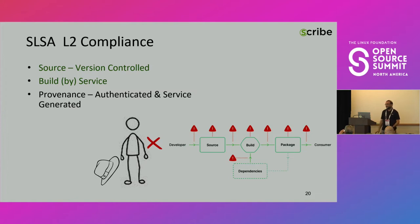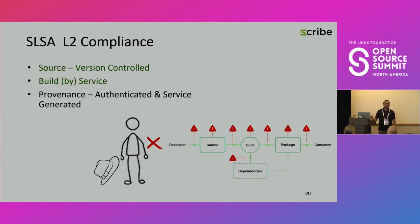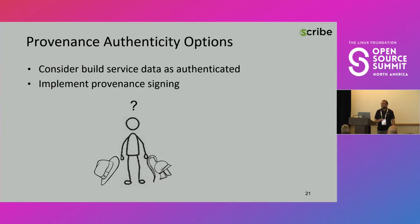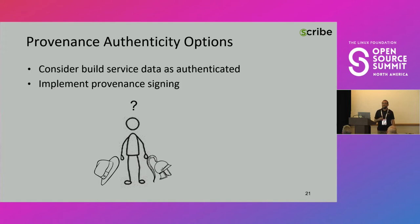So the source version control — again, once we're talking about modern projects, sources are version controlled; not much to do. Also, modern projects would be built by a service. So we're left with a provenance that should be authenticated and service generated. The natural answer of the security expert to 'what is authenticated' is 'signed' — you sign and verify the signature. But if we open up the SALSA documents, they wrote that it should be authenticated using public key cryptography, but it could also be authenticated in other ways.